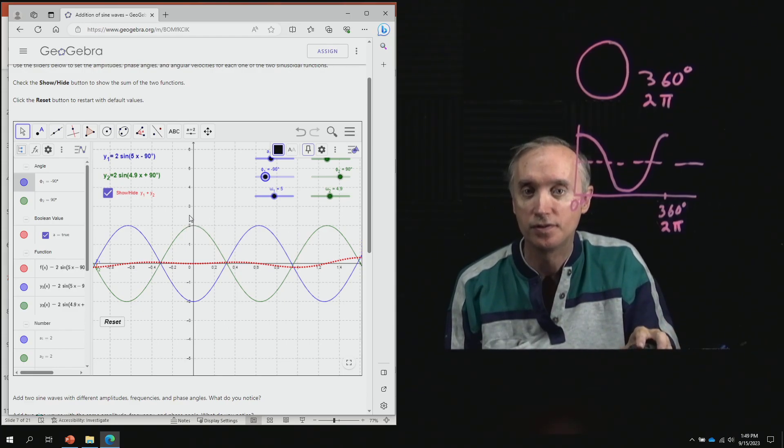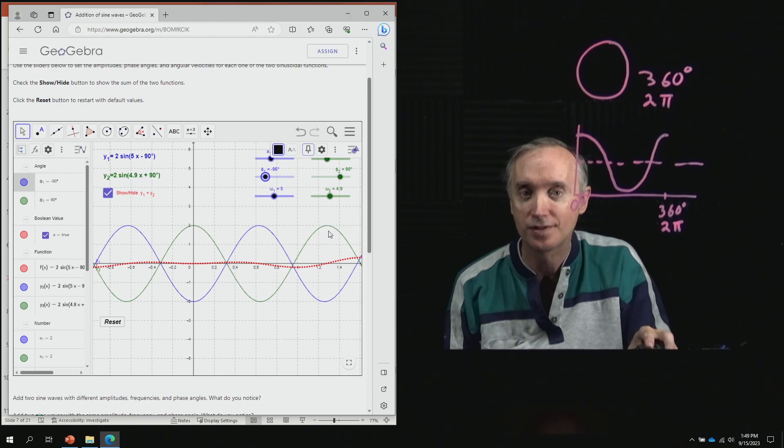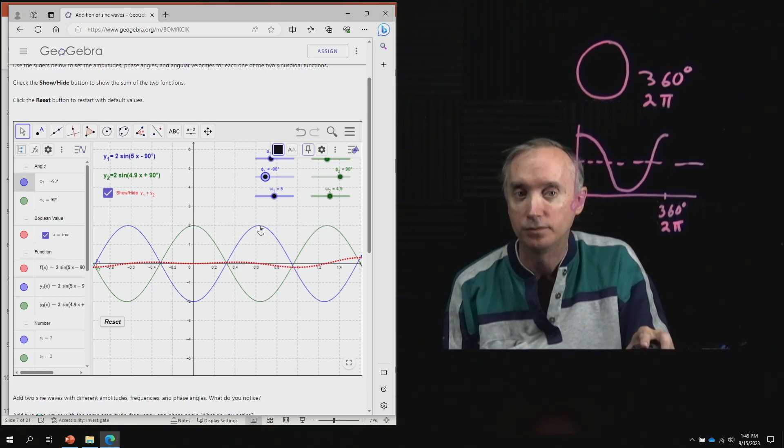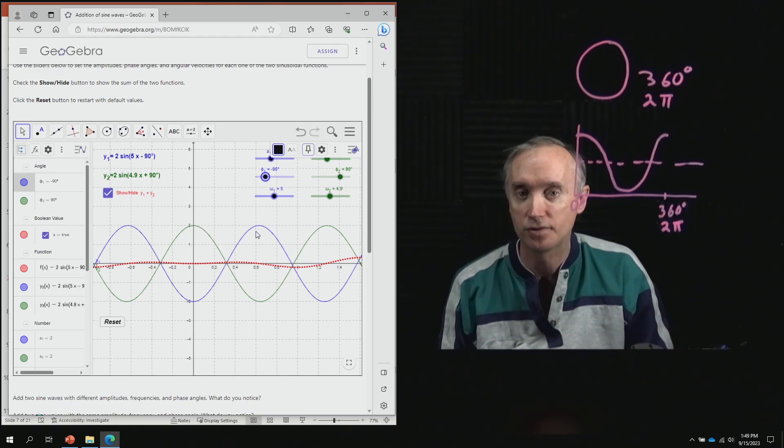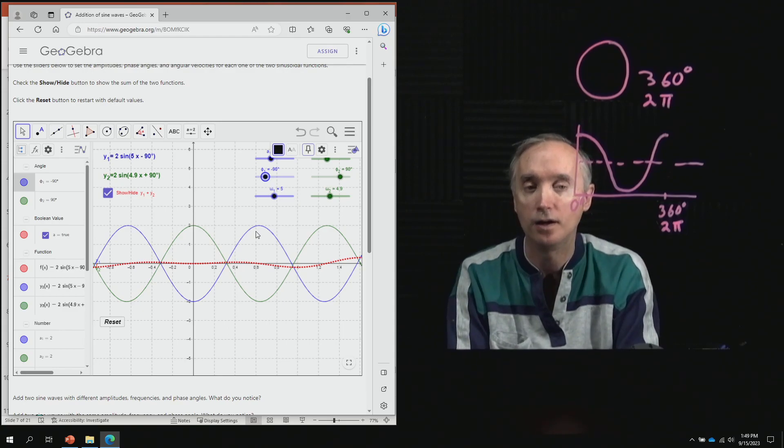So if this is zero degrees here, and then the green one repeats itself over here at 360, where do you suppose this blue one starts at? So right there, zero, 360, 180. So we say that this blue one, the phase difference between the green one and the blue one, is 180 degrees. So we say that they are 180 degrees out of phase.